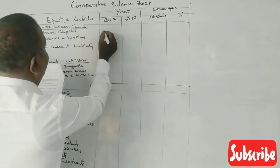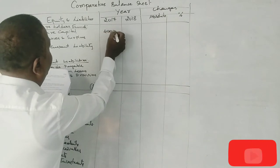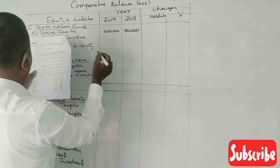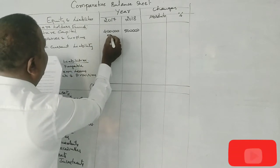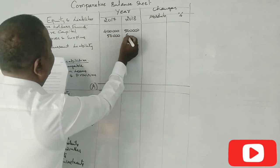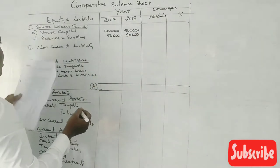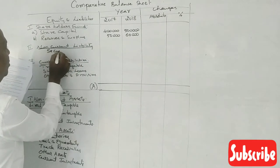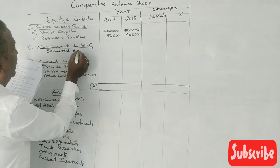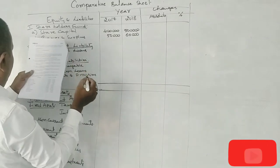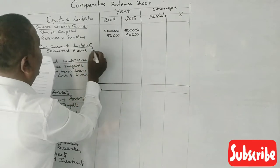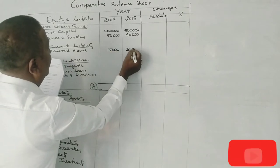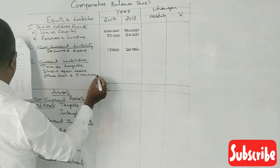Share capital is 4 lakhs in 2017 and 5 lakhs in 2018. General reserve is 50,000 and 60,000. Secured loans — this falls under non-current liabilities.